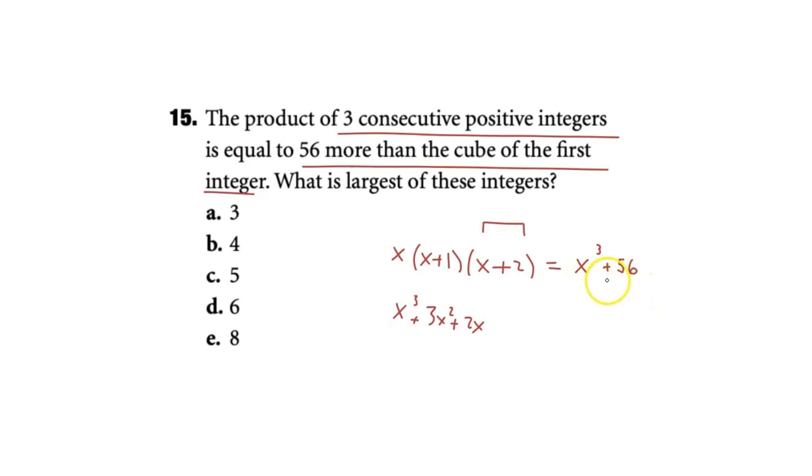And so if we subtract x cubed and 56 from both sides, what we end up getting is 3x squared plus 2x minus 56 would be equivalent to 0. So now that we have this expression, all we have to do is find the zeros of it.